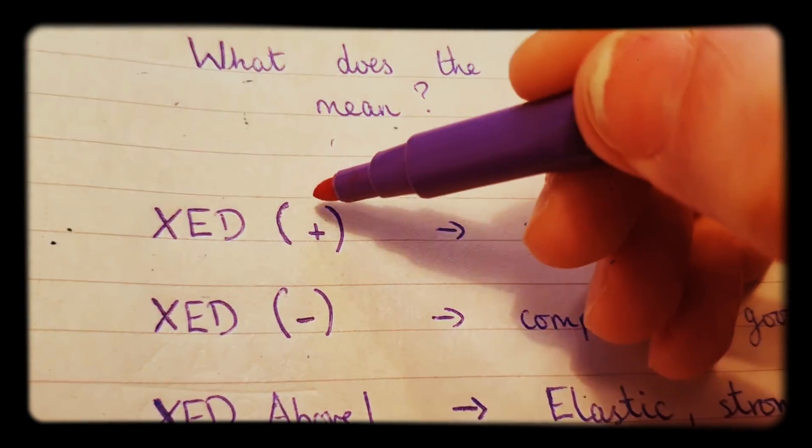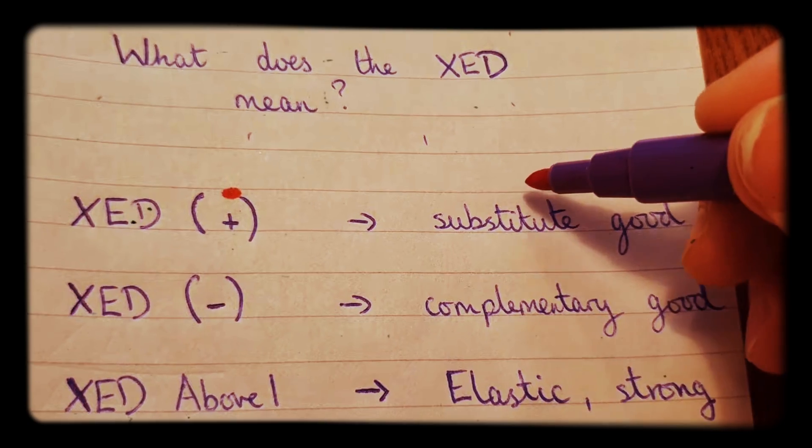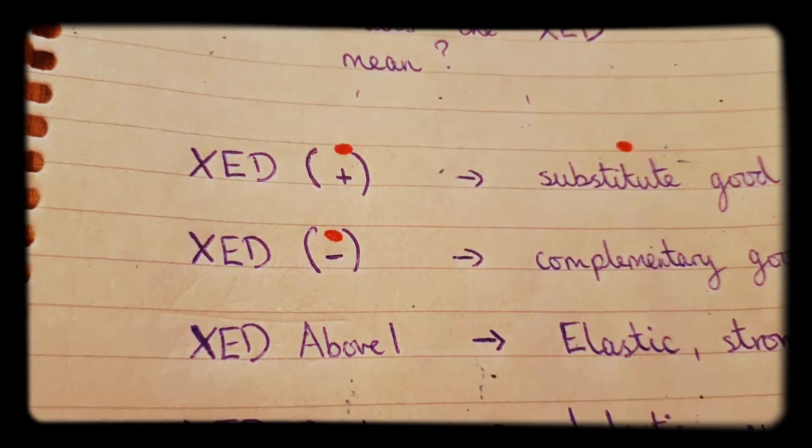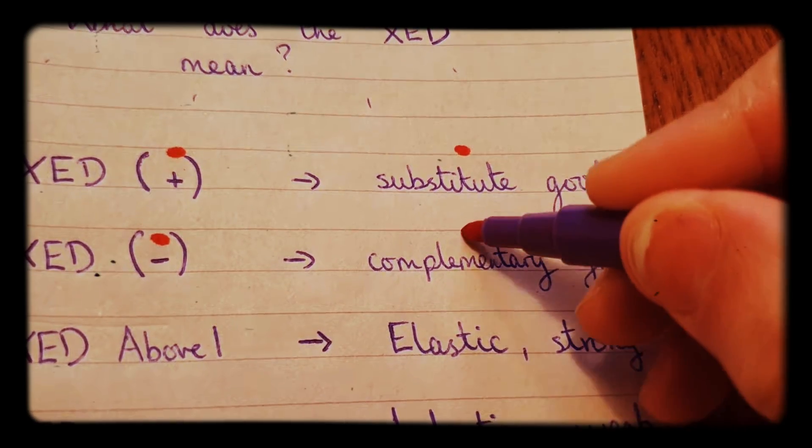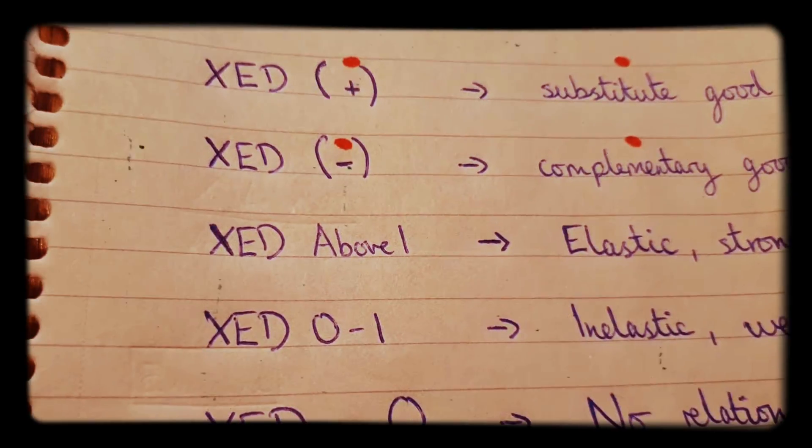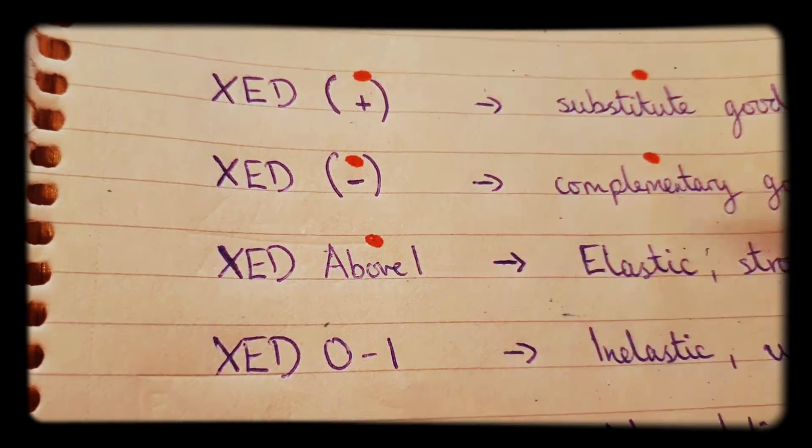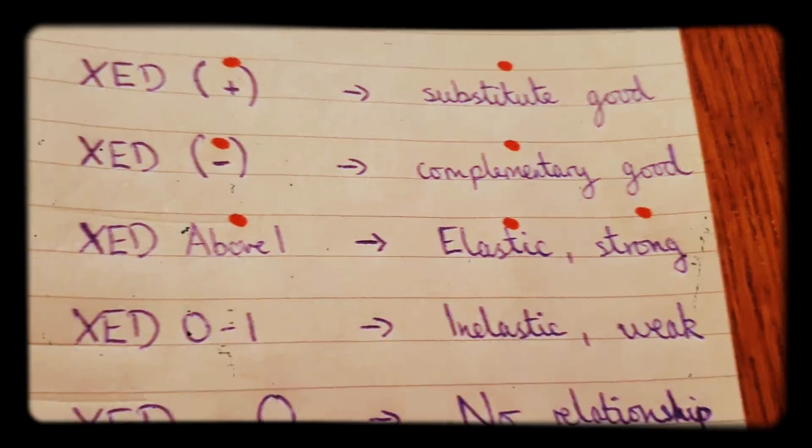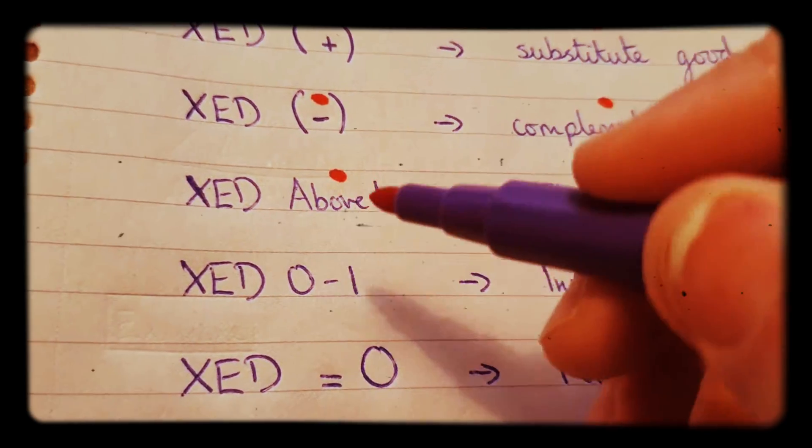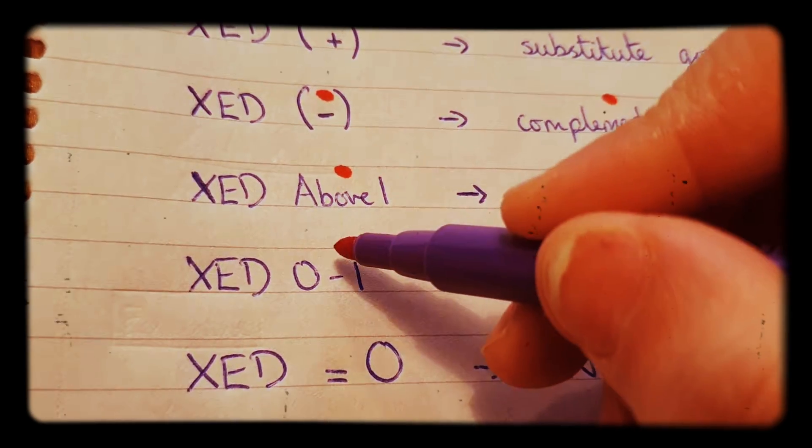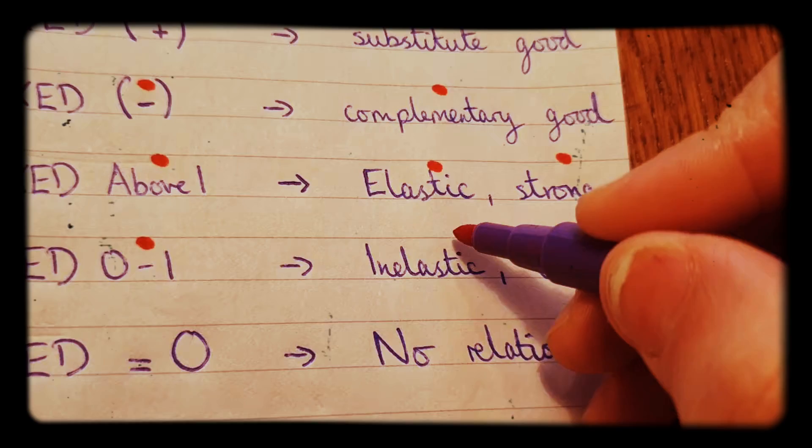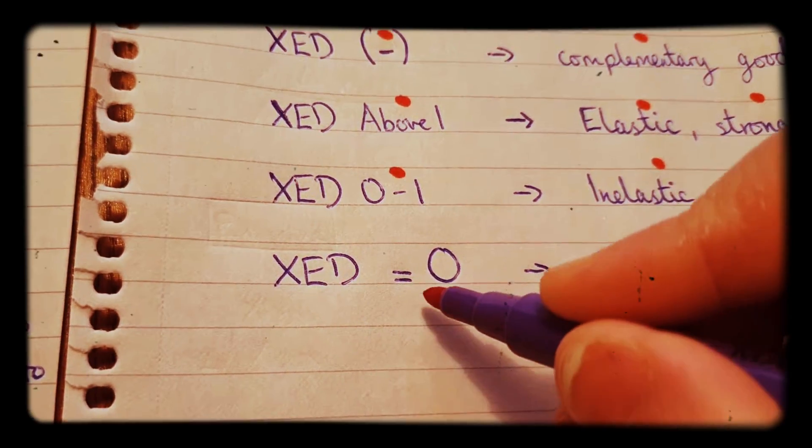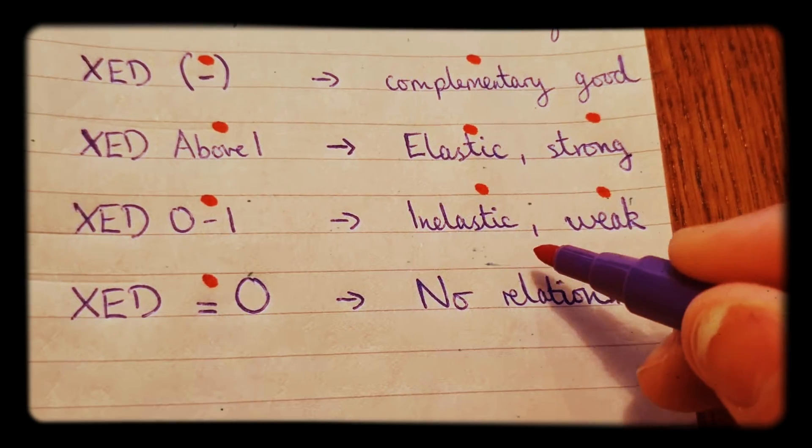First, if the sign is positive, it tells us it's a substitute good. If the XED is negative, it's a complementary good. If the XED is above 1, it's elastic, so it's a strong good. If the XED is between 0 and 1, it's inelastic, so it's weak. And if XED is 0, then there's no relationship.